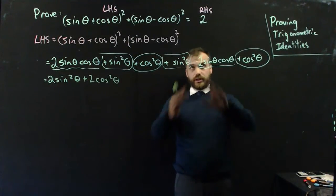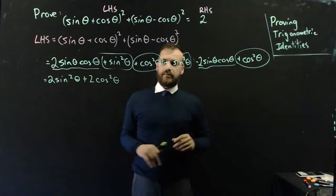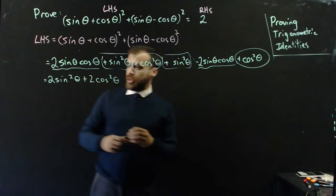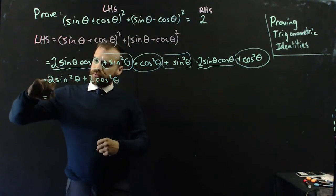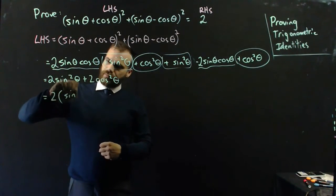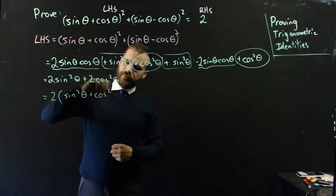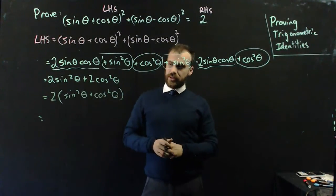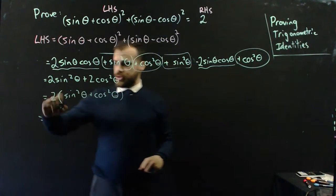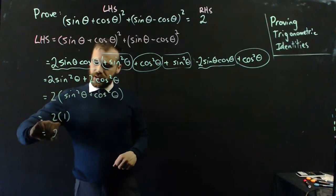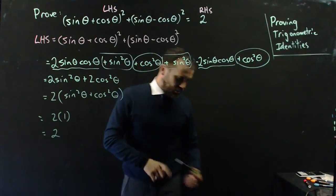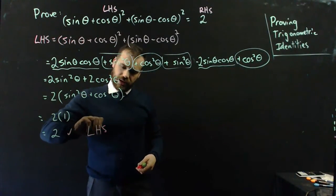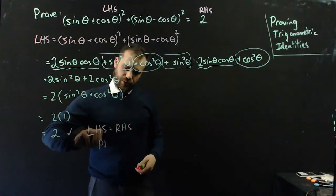We're looking for the number two. We've got two times sine squared theta plus cos squared theta. You see a two there, and sine squared theta plus cos squared theta — you see the Pythagorean identity. So two times one is two. And you celebrate, because now you know: tick, left-hand side equals right-hand side, proven.